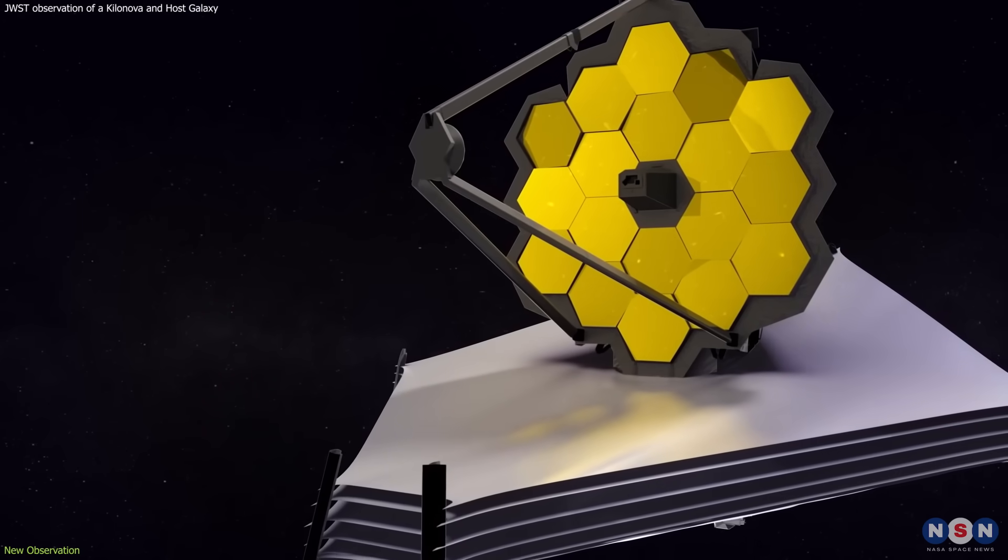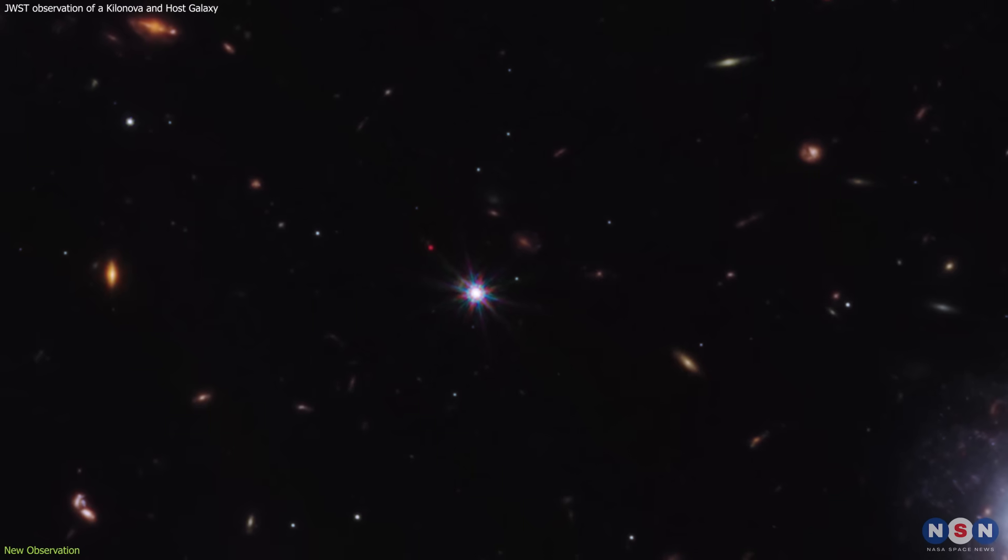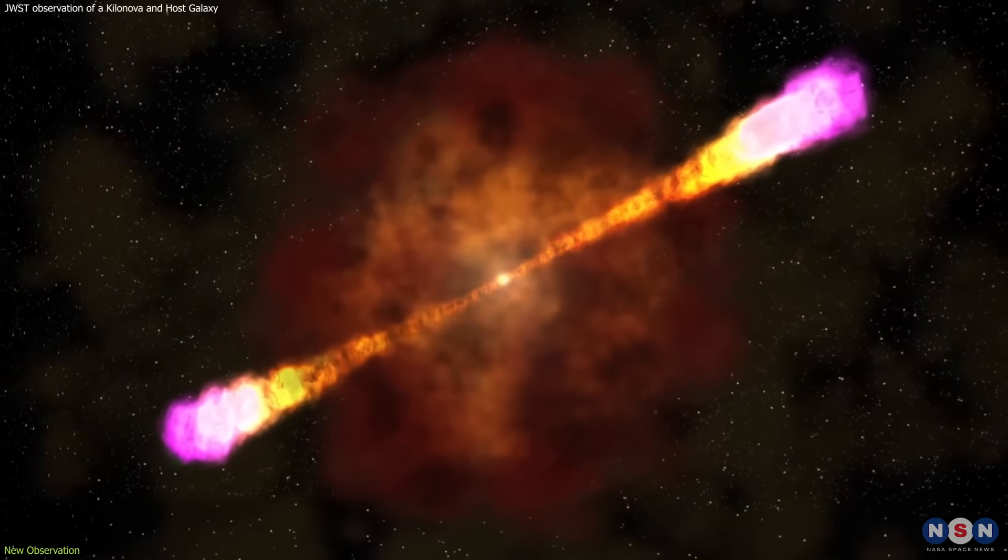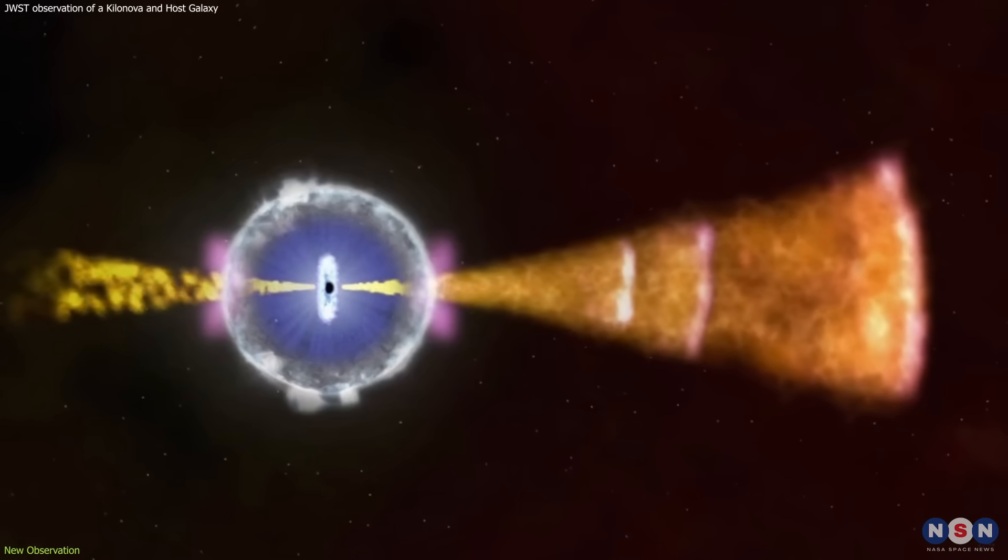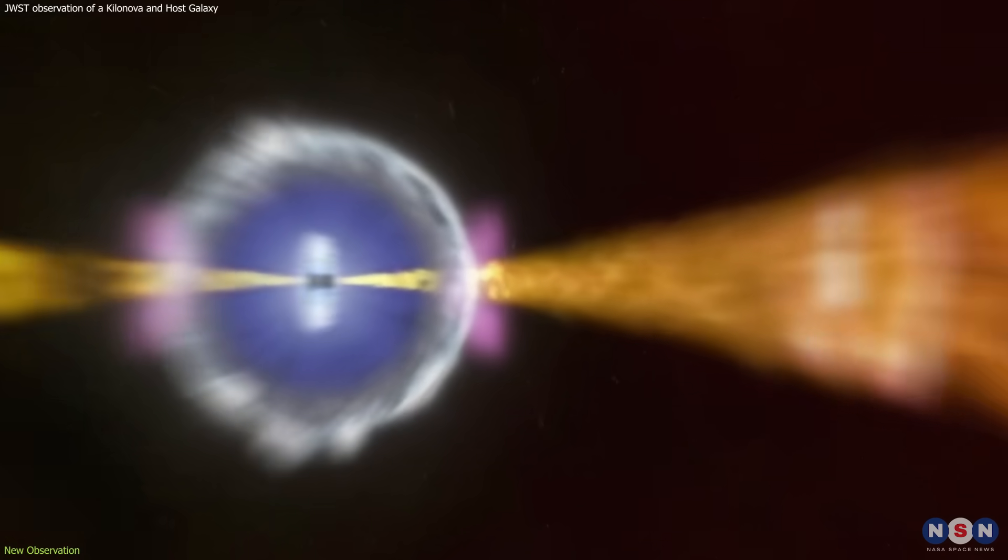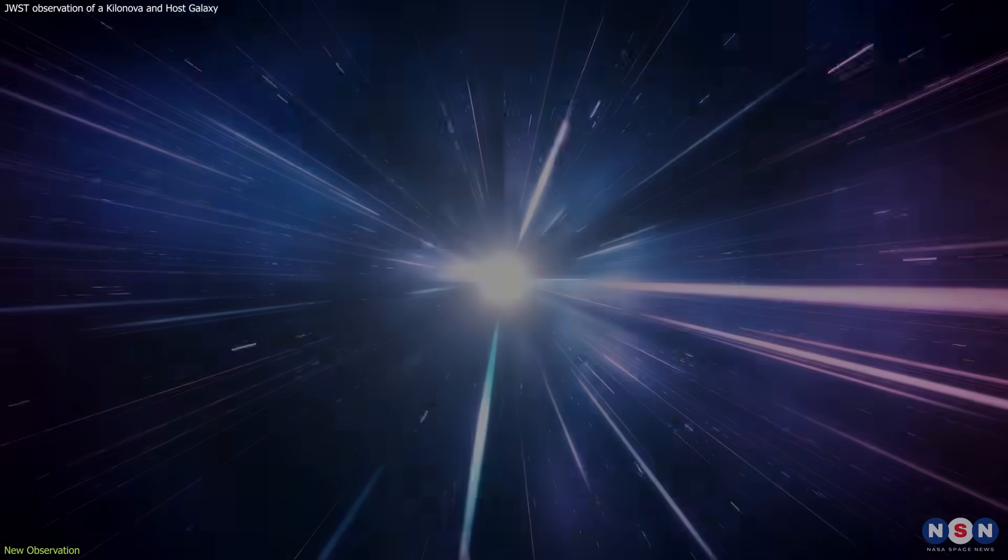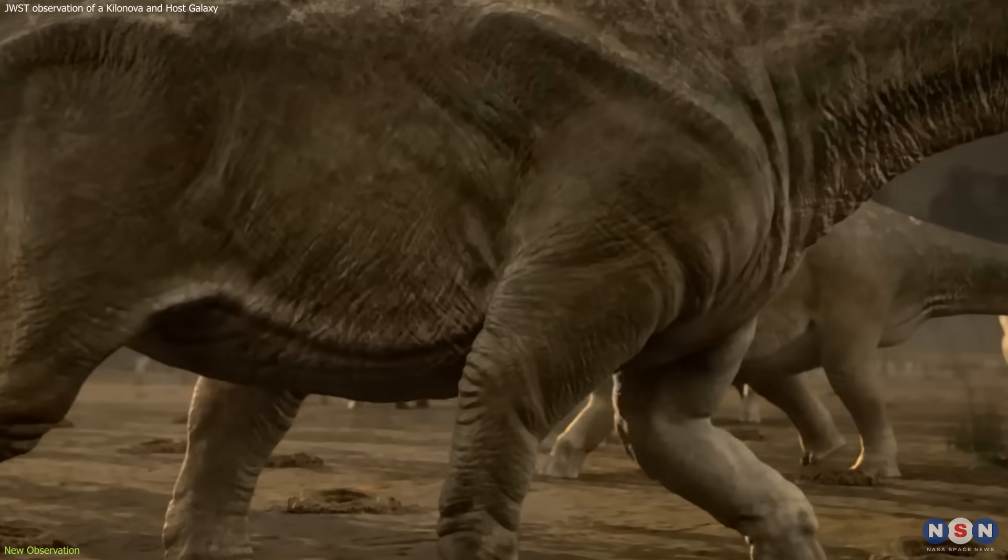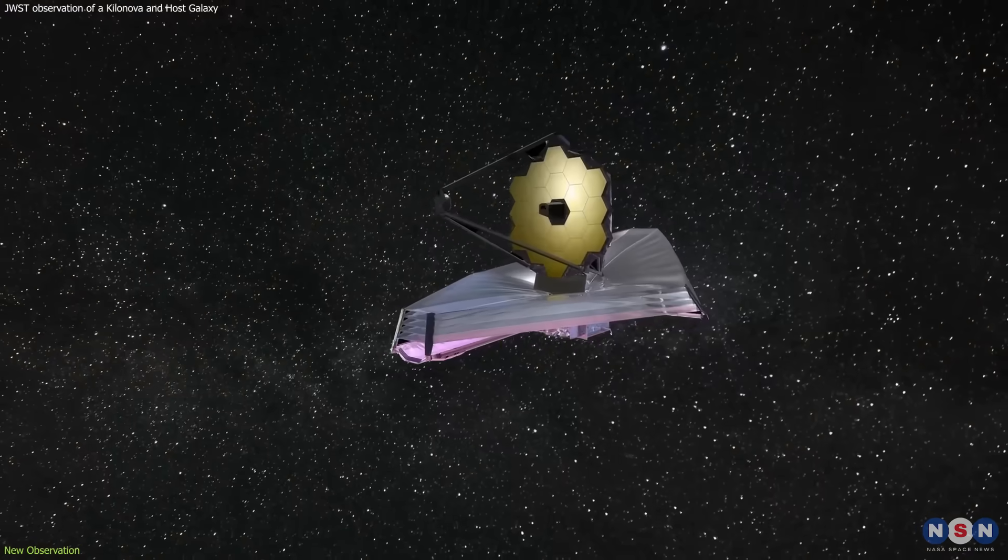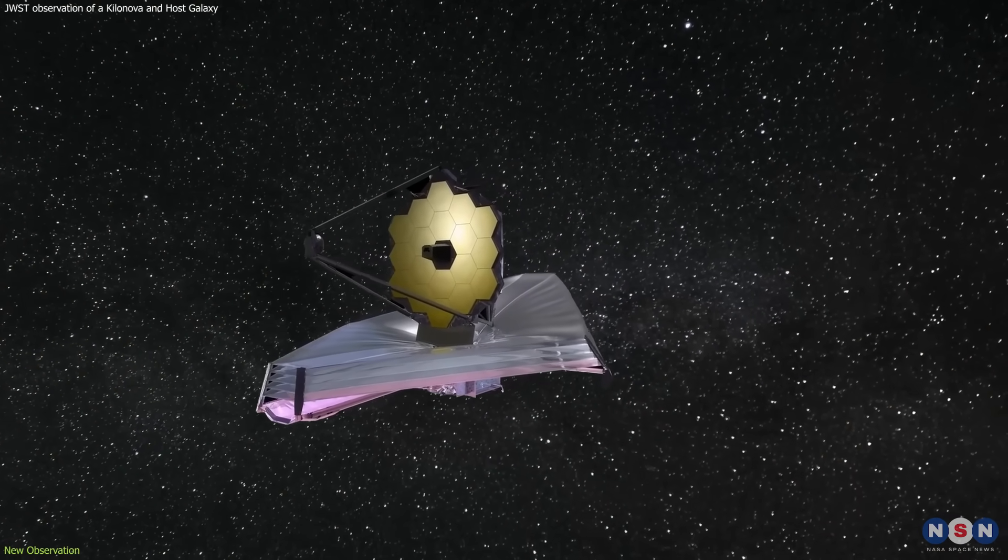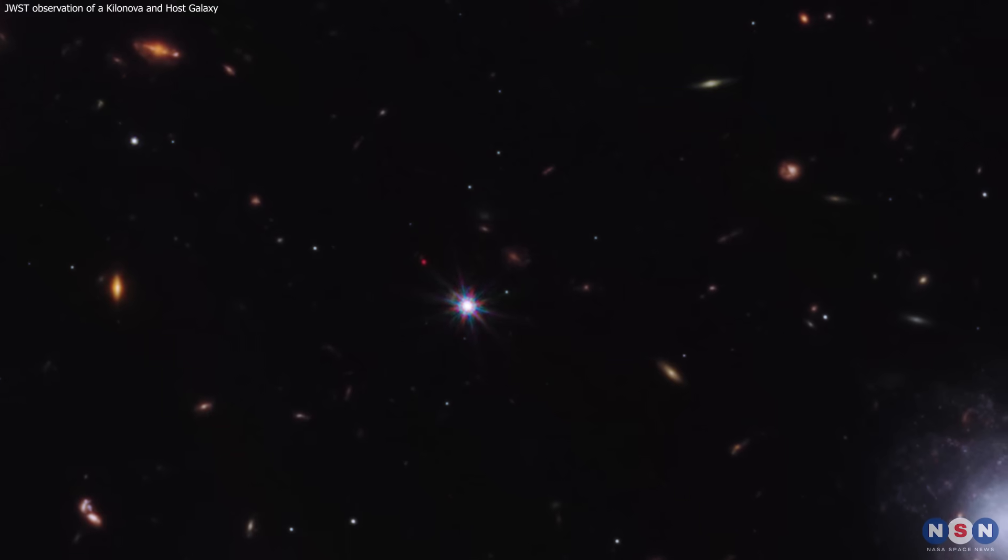What James Webb saw was stunning. The event was one of the brightest gamma ray bursts ever seen, lasting for 34 seconds. It was also one of the closest gamma ray bursts ever seen, at a distance of about 130 million light-years from Earth. This means that it happened when dinosaurs roamed our planet. But most importantly, Webb saw something that no other telescope had ever seen before, the clear signature of a kilonova.